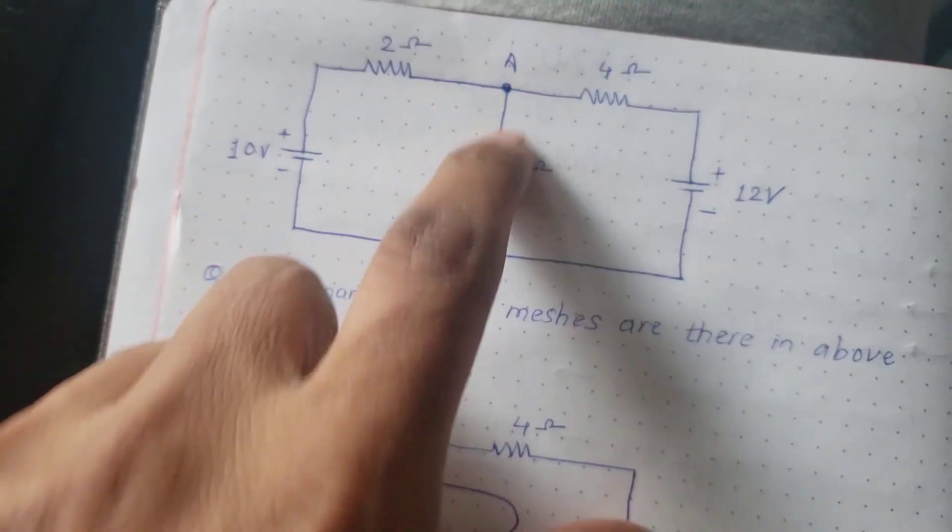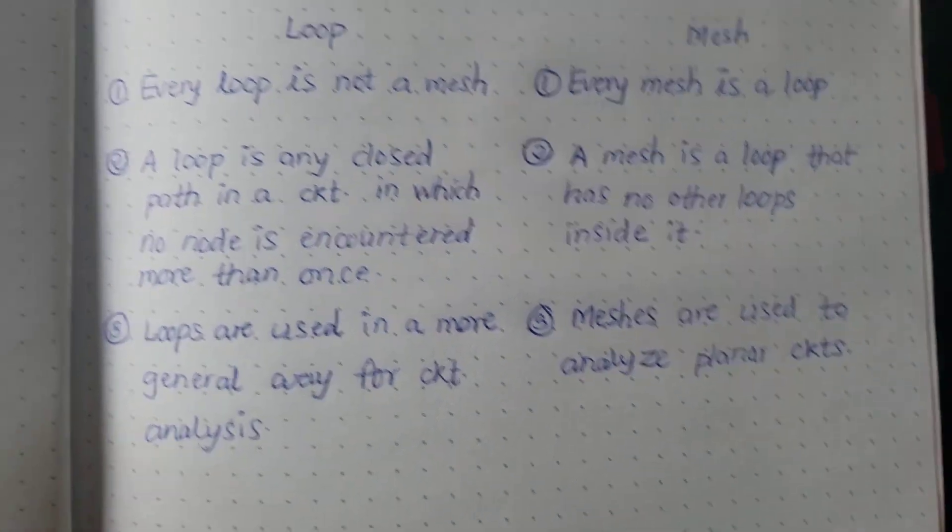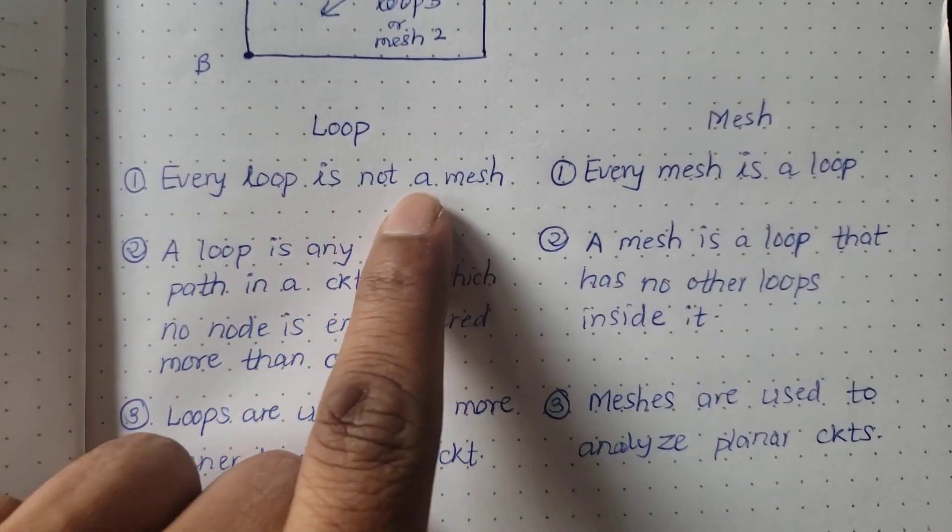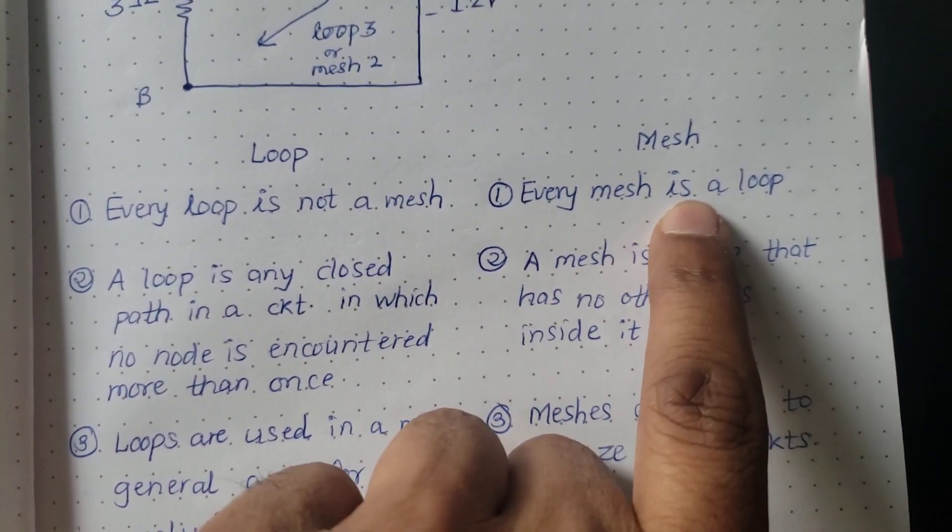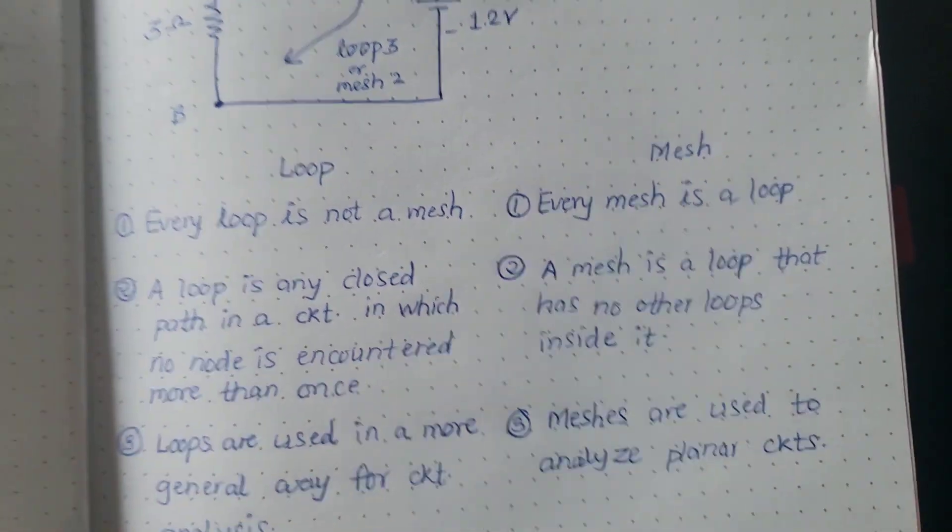What is the second point? Every loop is not a mesh. Every loop is not a mesh, but every mesh is a loop. Let me explain.